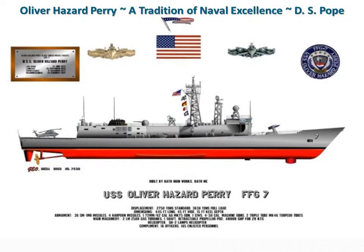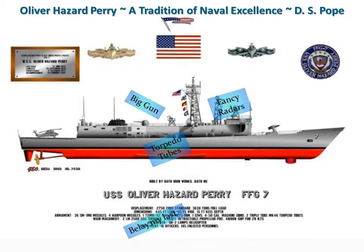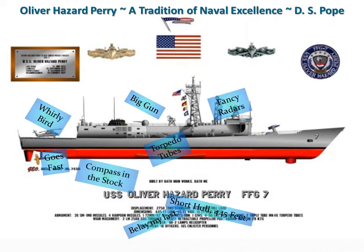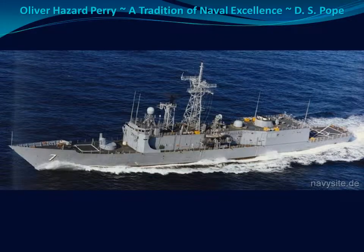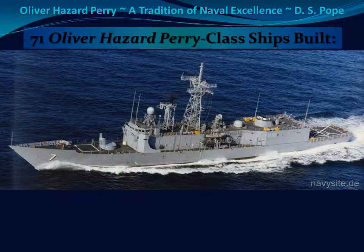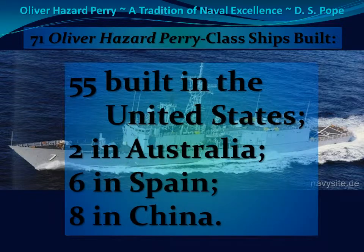The USS Oliver Hazard Perry, FFG-7, was launched on September 27, 1976 and commissioned on December 17, 1977. She was 453 feet long and 45 feet wide with a navigable draft of 24.6 feet. She was decommissioned on February 20, 1997 and scrapped in December 2005. There have been a total of 71 Oliver Hazard Perry-class ships built: 55 in the United States, two in Australia, six in Spain, and eight in China.